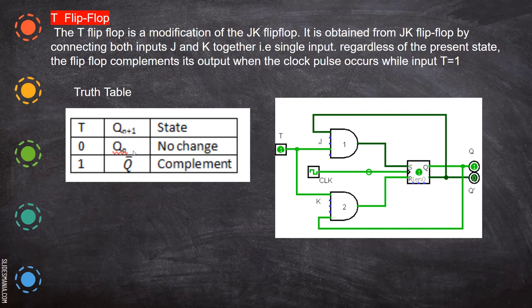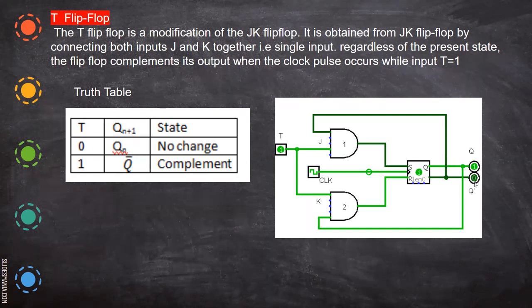When T is zero, there will be no change - it is said to remain in the previous state. When T is one, we have the complement. They will toggle.